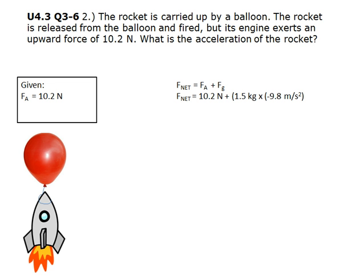The gravitational force is 1.5 kilograms, the rocket's mass, times negative 9.8 meters per second squared, the gravitational constant. We get an average net force of negative 4.5 newtons.